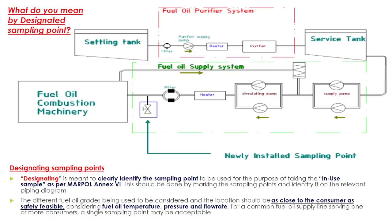The second question that is asked is: what do you mean by designated sampling point? If a surveyor asks you what is a designated sampling point, you should say that designating means you should clearly identify the sample point. It means the sample point which has been made in such a way that it clearly says this is the sampling point. Basically it is talking about the in-use sample — a sampling point which represents what type of fuel is burned in the fuel oil combustion machinery. This will be reflected in a pipeline diagram, and there will be a stamp of the flag state authority which approves it during the IAPP renewal survey, confirming that this pipeline has been modified and approved.